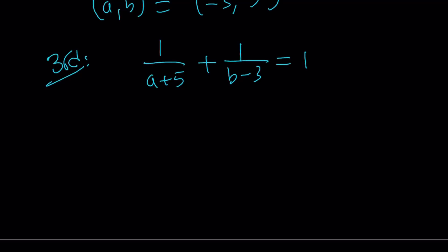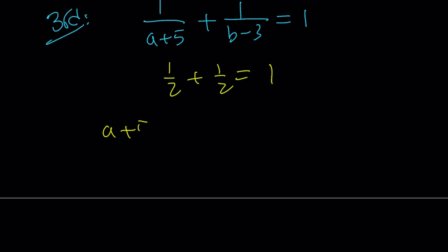1 half and 1 half, obviously, right? 1 half plus 1 half equals 1. Case closed. That's it. From here, we get a plus 5 is equal to 2, which means a is negative 3. And if b minus 3 is equal to 2, we get b equals 5. And those are the solutions, as you know.